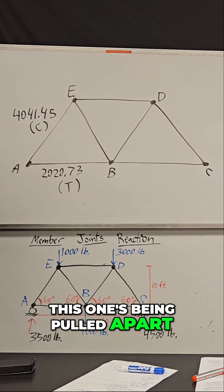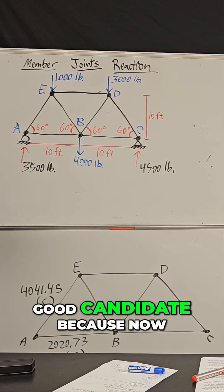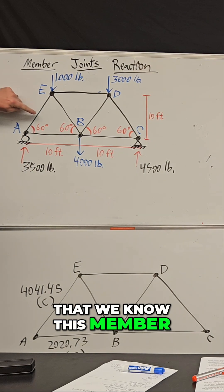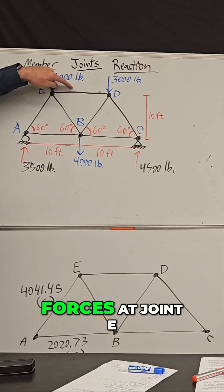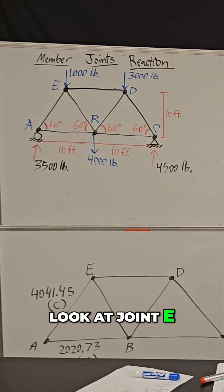This one's being pulled apart. Now we're ready to move on to the next joint in our analysis. I think joint E is a good candidate because now that we know this member, there's only two unknown forces at joint E, and that one is possible to solve.